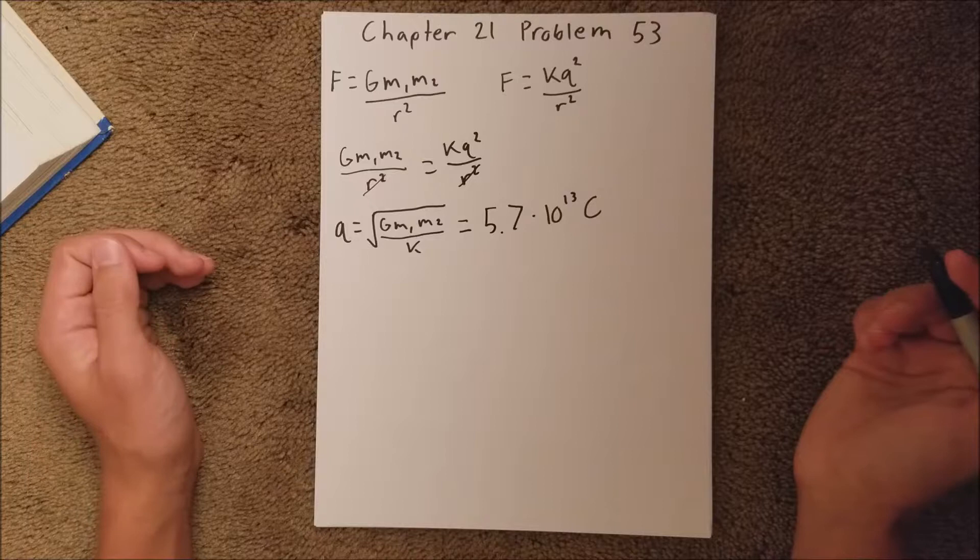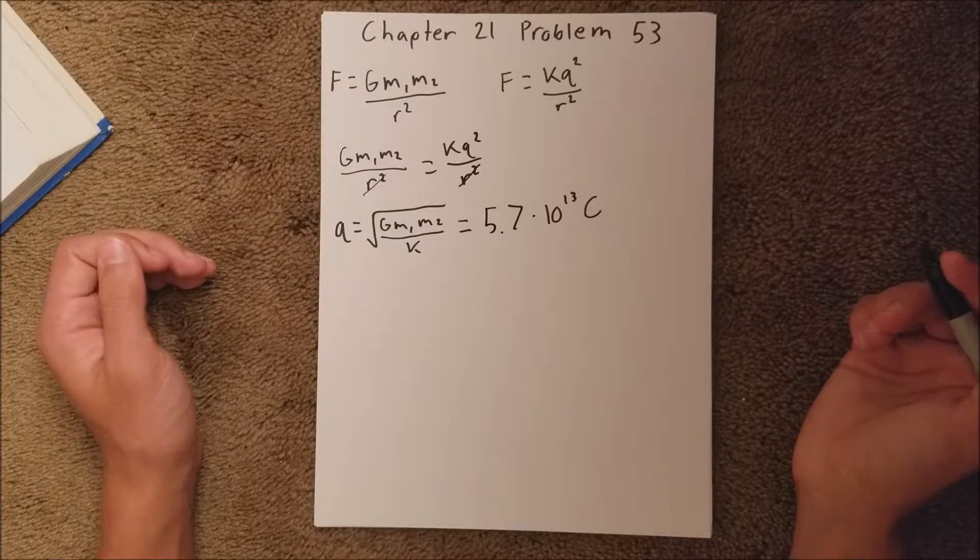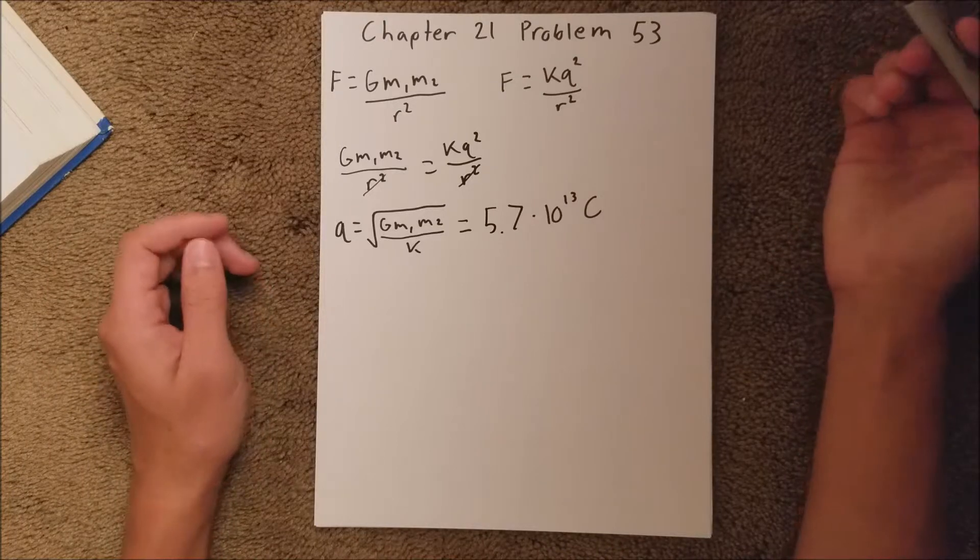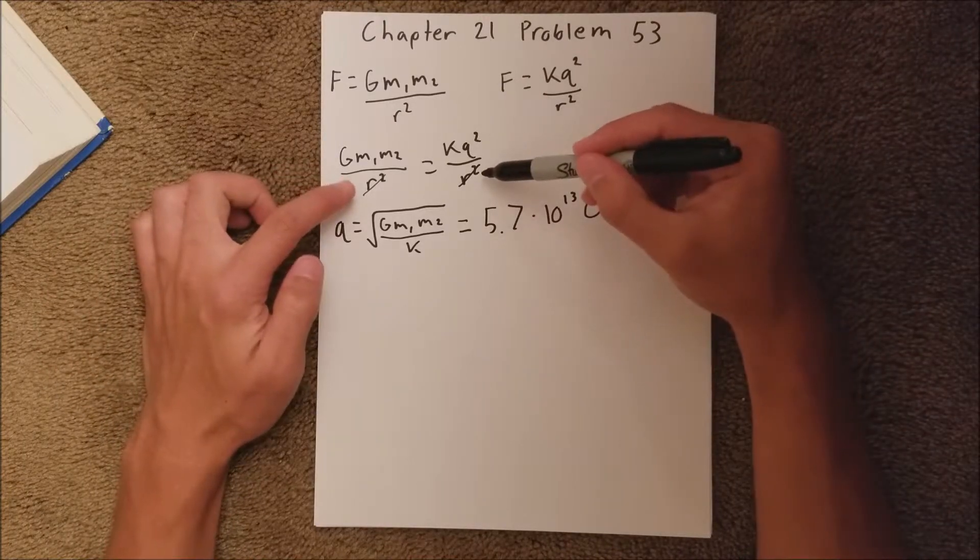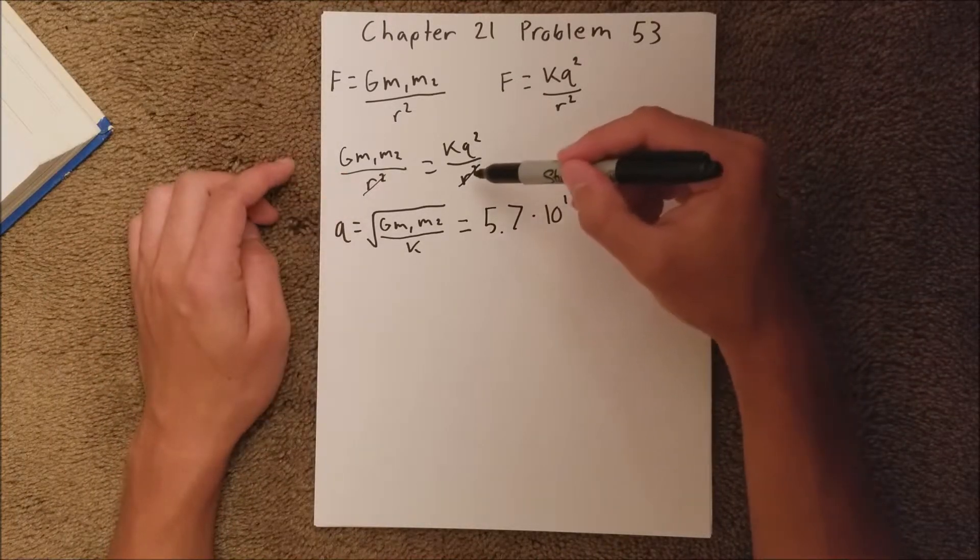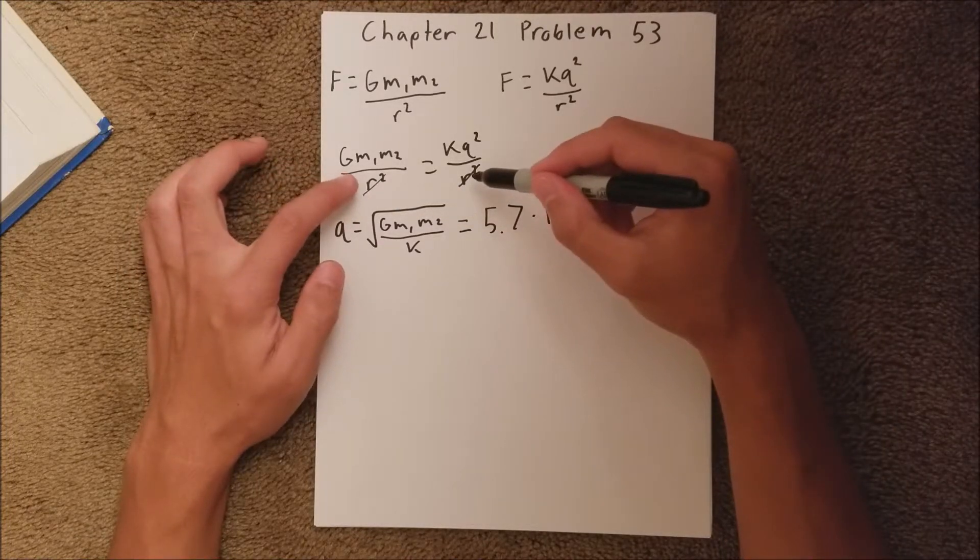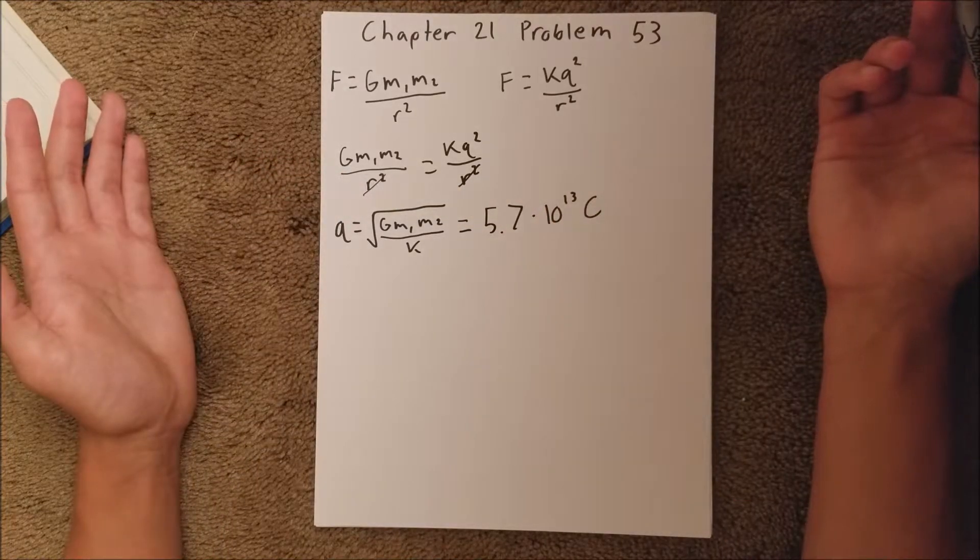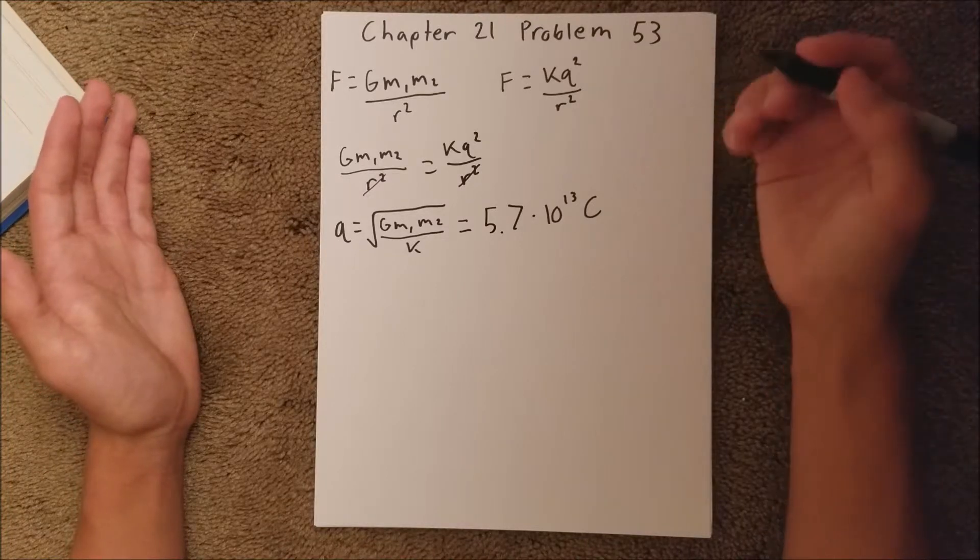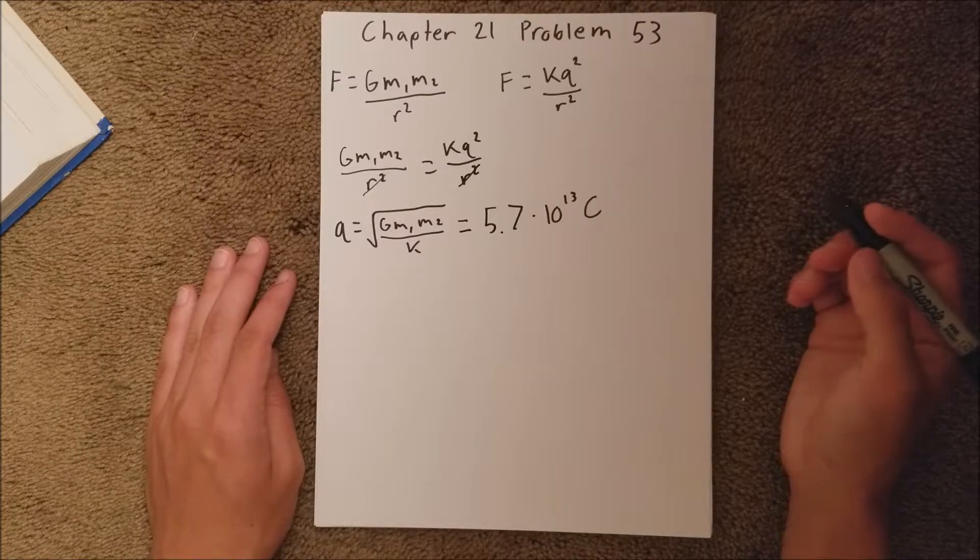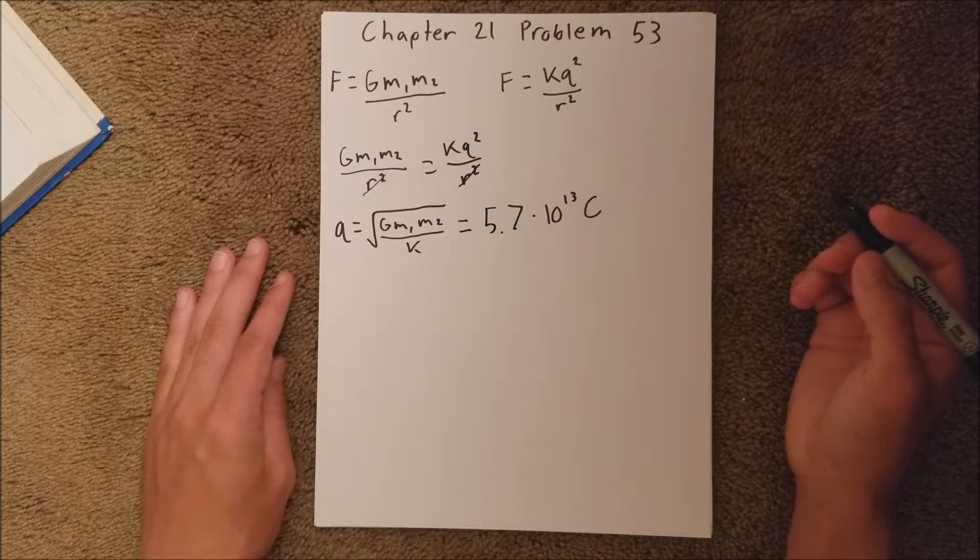And Part B asks why you don't need to know the lunar distance between the Earth and the Moon. And that is because right here, you can see that the radius on either side is on both sides of the equation. So I can cross them out. And so you don't actually need to know the value since they cancel. And for the final part of this problem,